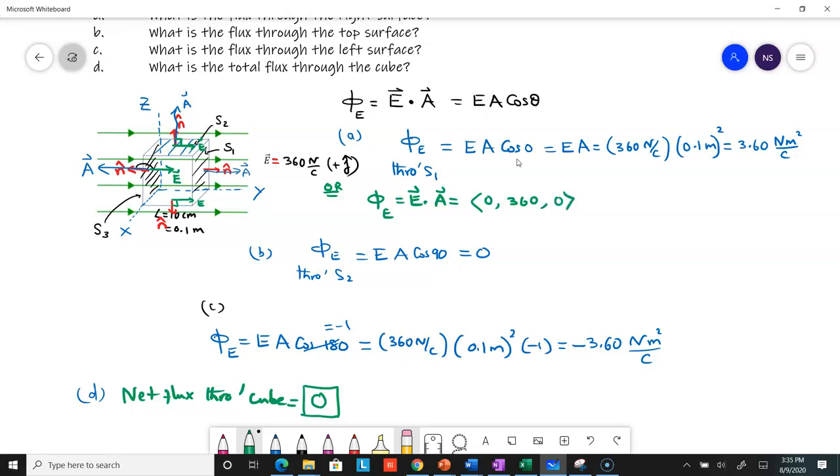Dotted with the area vector for S1, the area vector is also in the y direction: (0, 0.1 meters squared, 0) square meters.